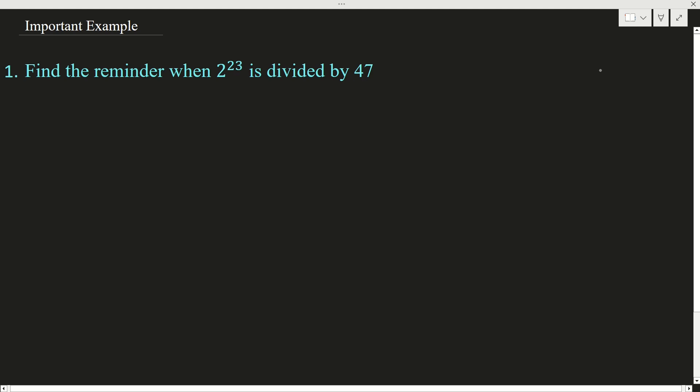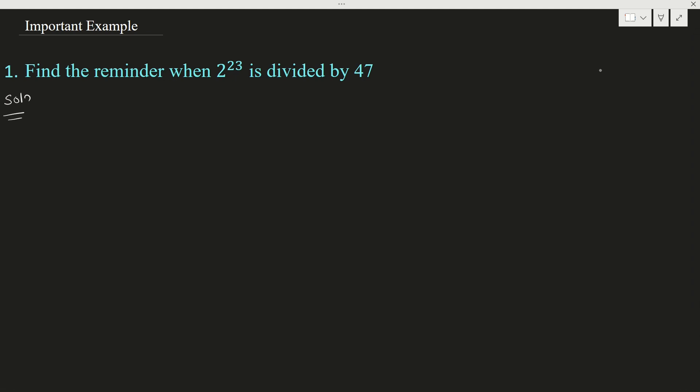Now let us see how to solve. We need to find the remainder of this number whenever it is divided by 47. We will take a possible small power of 2 which is divisible by 47. We know that 2 to the power 8 is 256. Whenever 256 is divided by 47, what remainder will be left? Let us check — divide 256 by 47.